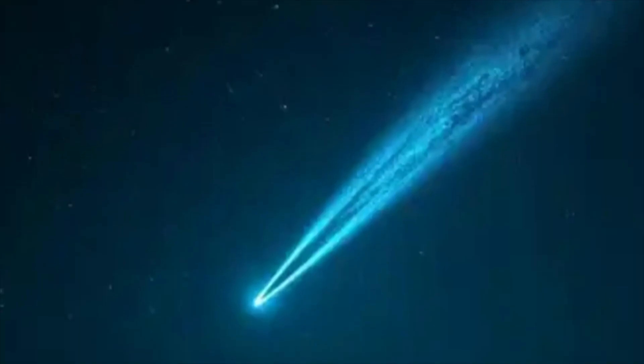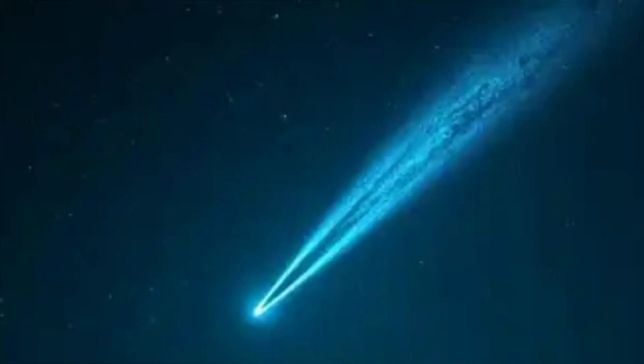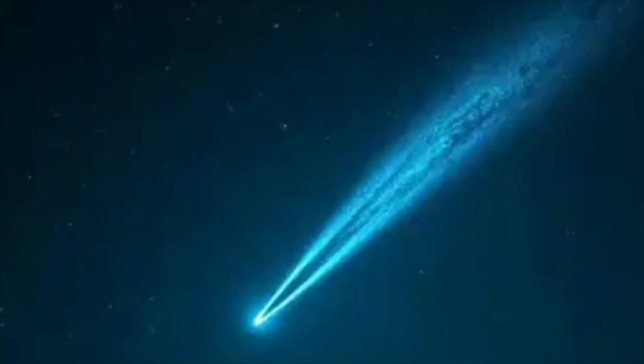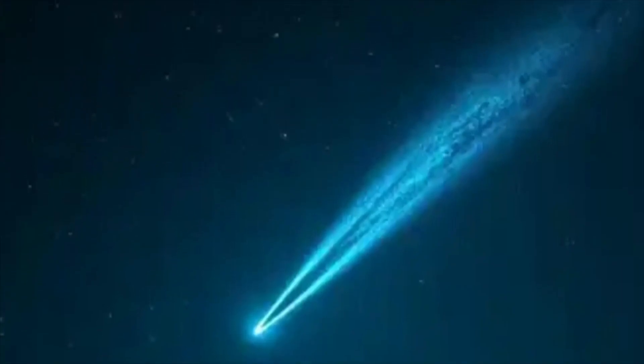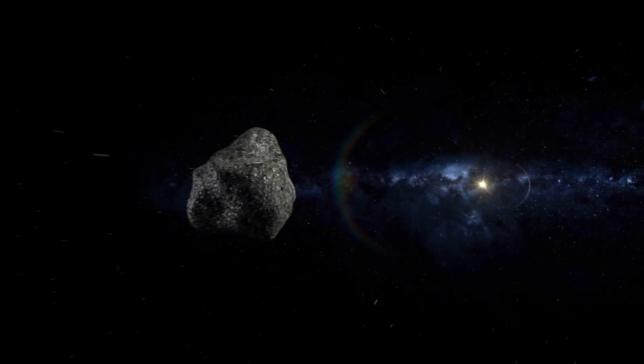But 2I/Borisov is treating physics like a suggestion. The Hubble images from December show a double jet structure, and one of those jets is pointing into the wind. It is pointing at the sun. This is an anti-tail, and it refuses to fade.